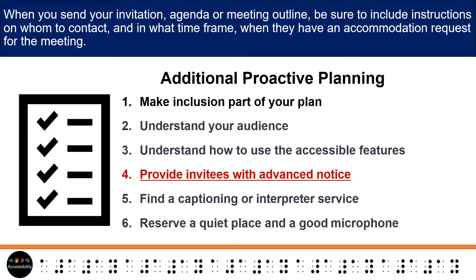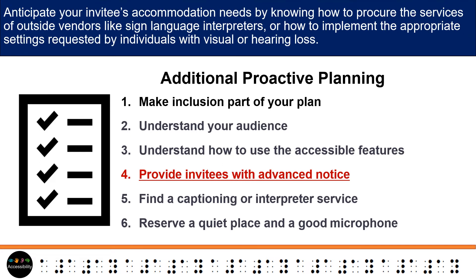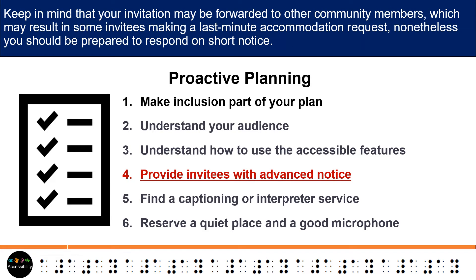When you send your invitation, agenda, or meeting outline, be sure to include instructions on whom to contact and in what time frame when they have an accommodation request for the meeting. Anticipate your invitee's accommodation needs by knowing how to procure the services of outside vendors like sign language interpreters, or how to implement the appropriate settings requested by individuals with visual or hearing loss. Keep in mind that your invitation may be forwarded to other community members, which may result in some invitees making a last-minute accommodation request; nonetheless, you should be prepared to respond on short notice.